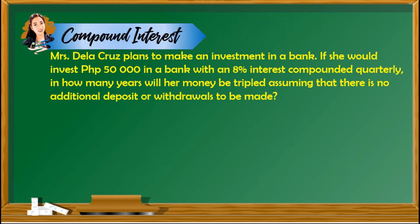Let's begin with compound interest. Mrs. De La Cruz plans to make an investment in a bank. If she would invest $50,000 in a bank with an 8% interest compounded quarterly, in how many years will her money be tripled, assuming that there is no additional deposit or withdrawals to be made?